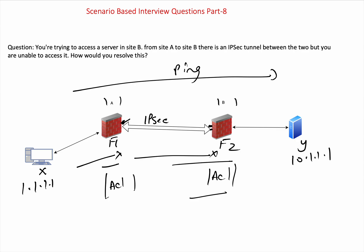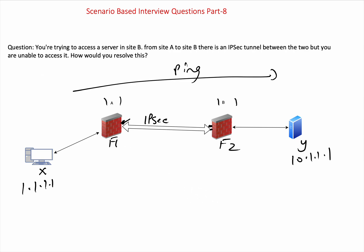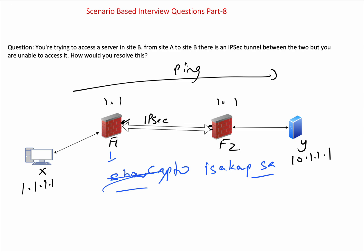But if it fails at F1, you need to check the tunnel status. You need to check what the tunnel status is — whether IKE/ISAKMP is established or not. You log into F1 and use commands like 'show crypto ipsec sa' or 'show crypto isakmp sa'. Most people now use UIs to check if the tunnel status is up or not, and where it is failing — either phase 1 or phase 2, whichever is causing the issue.